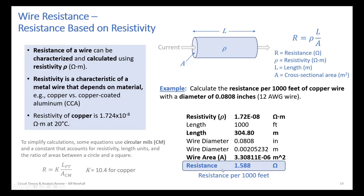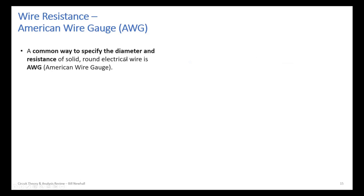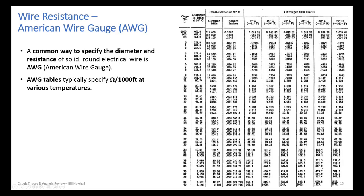Wires are usually not specified by diameter but by gauge. In the US, we use American Wire Gauge (AWG) — nobody says 'American Wire Gauge,' everyone just says AWG. AWG is the common way to specify the diameter and resistance of solid, round electrical wire. AWG tables specify ohms per thousand feet at various temperatures.